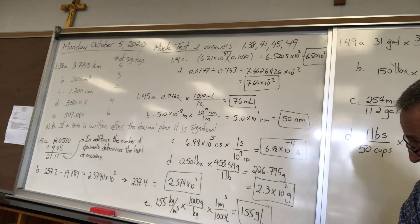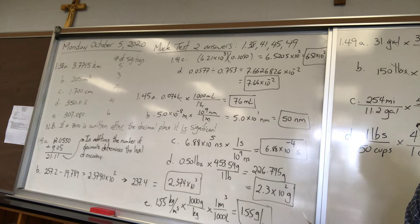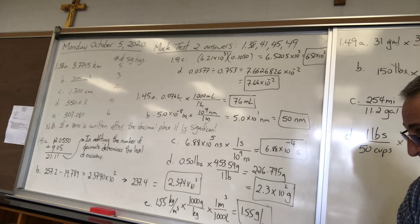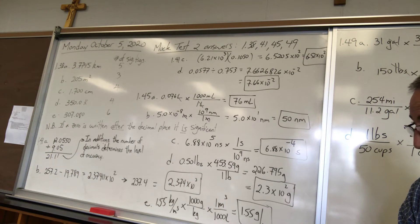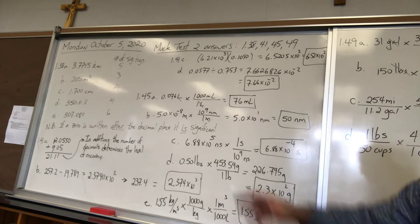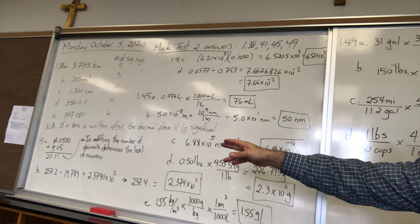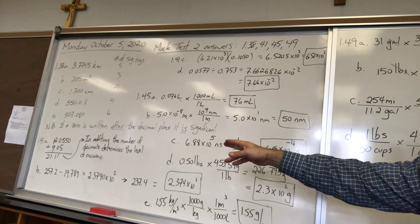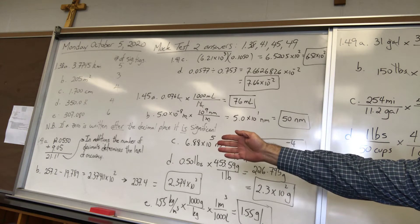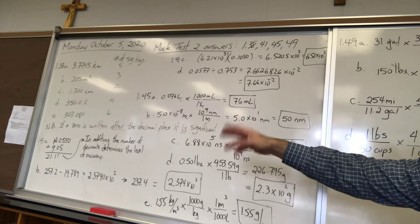41 A? Yes. 12.0550. And for that one the question is carry out the following operations and express the answers with the appropriate number of significant figures. So in addition and subtraction the number of significant figures is going to be determined by the number of decimals. The number of digits after the decimal. So if you only have two numbers after the decimal in one number and four numbers after the decimal in another number you can only report your answers to two digits after the decimal because that's the less accurate one. So that's what's going to determine the level of accuracy of the whole measurement.